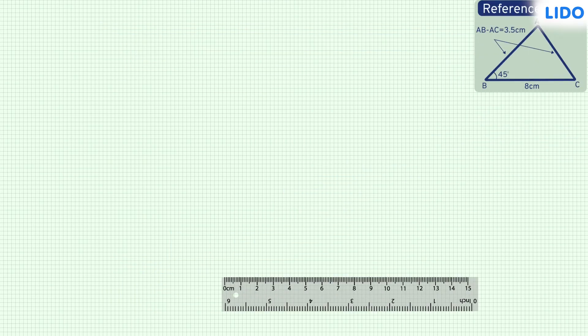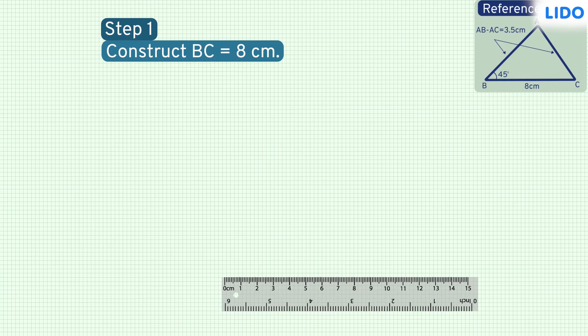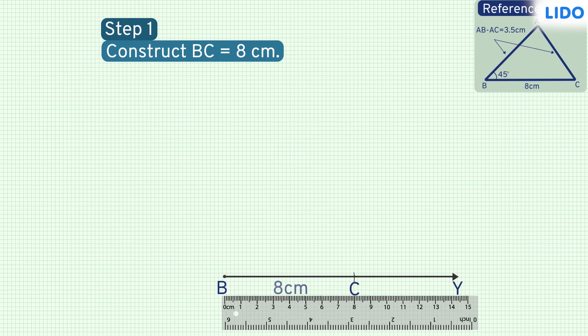We start with constructing the base BC. For this, we will draw a ray BY and from the same ray, we cut off BC equal to 8 cm.